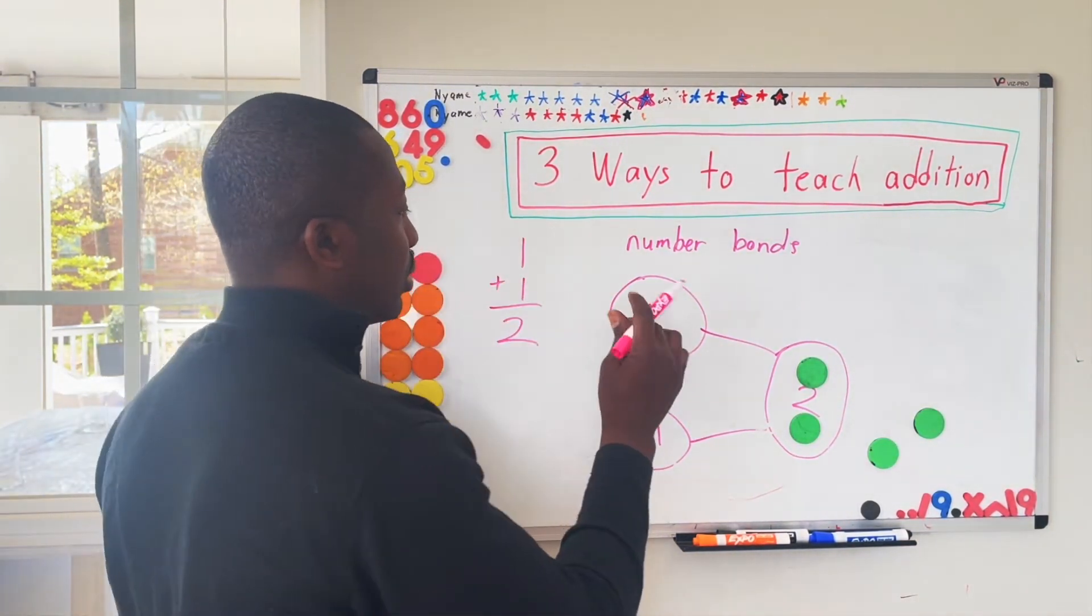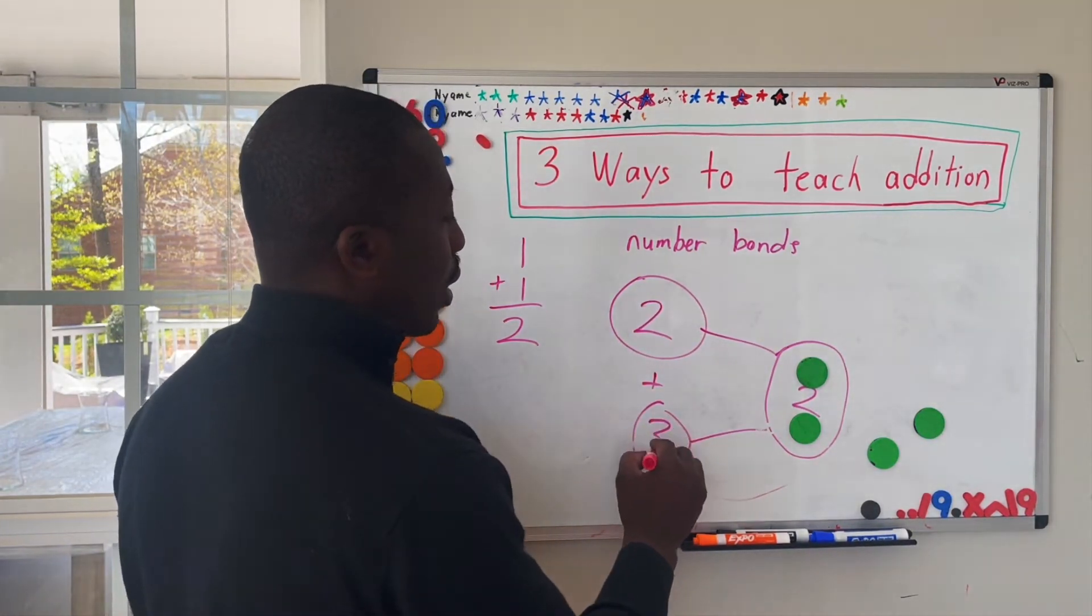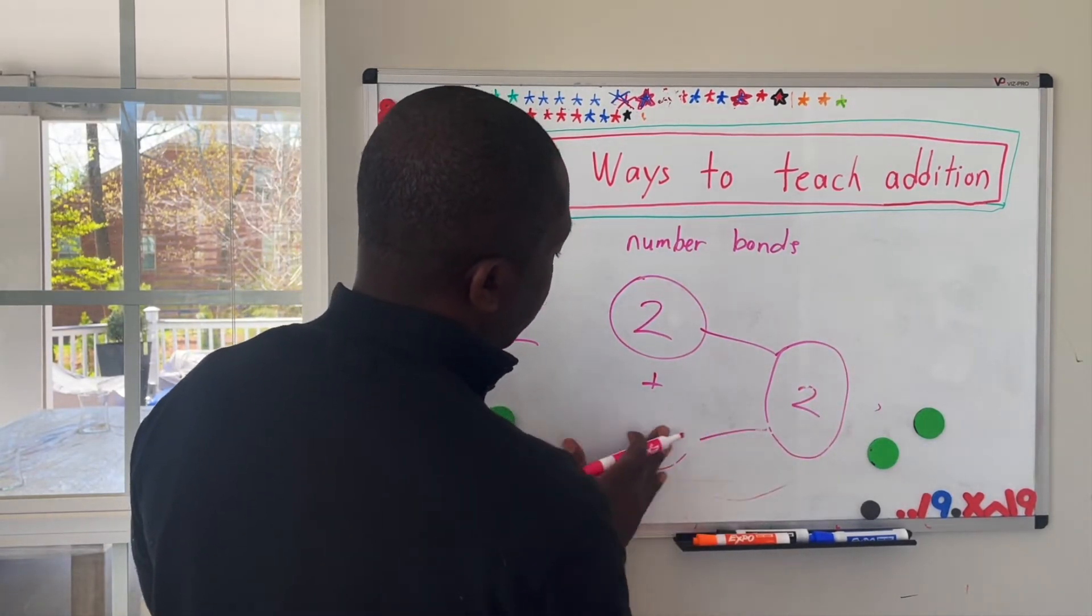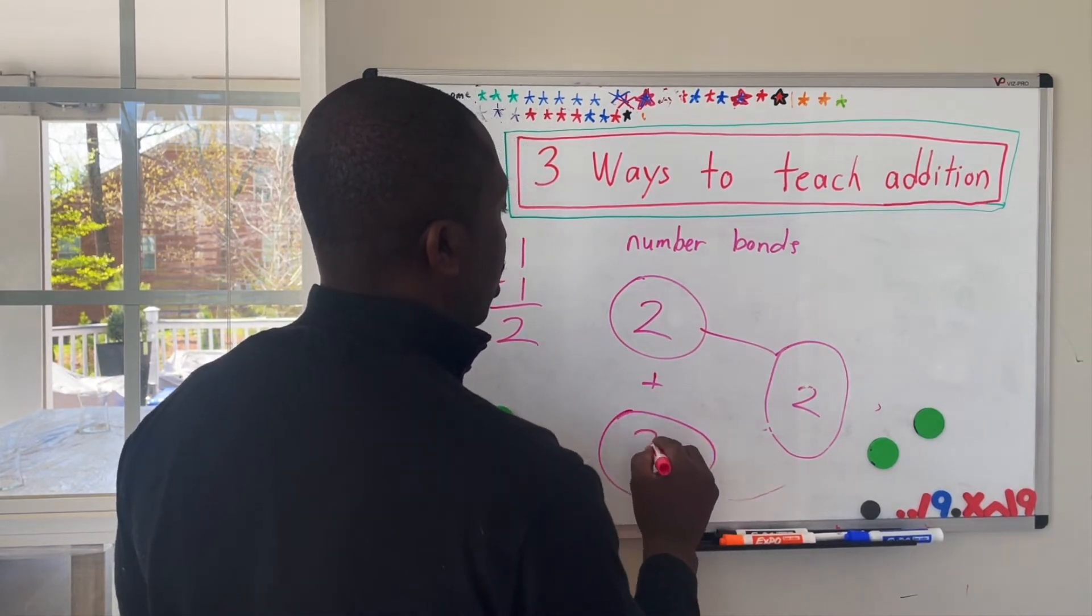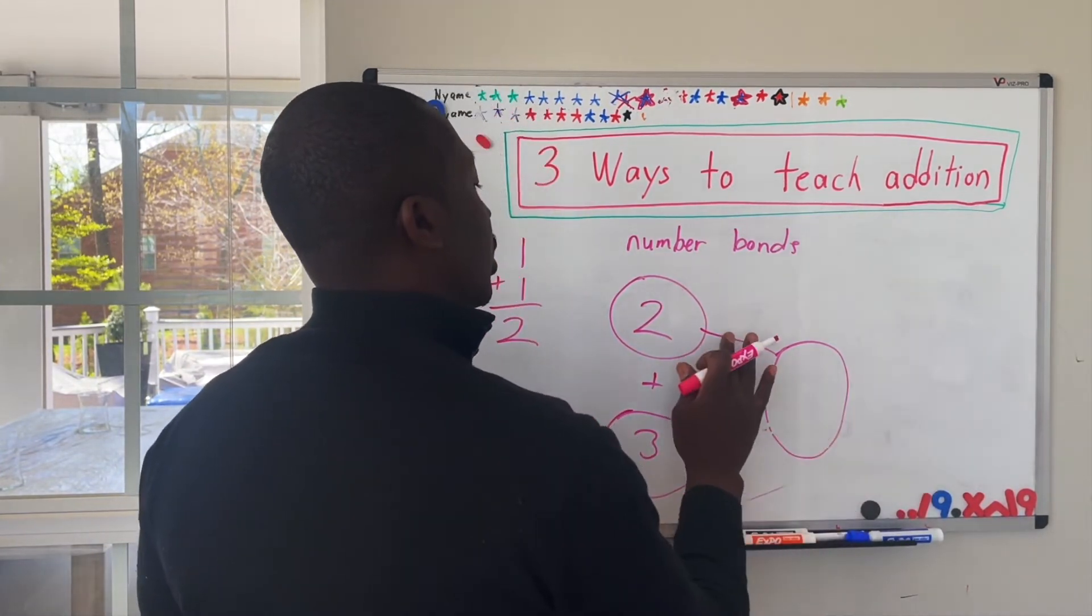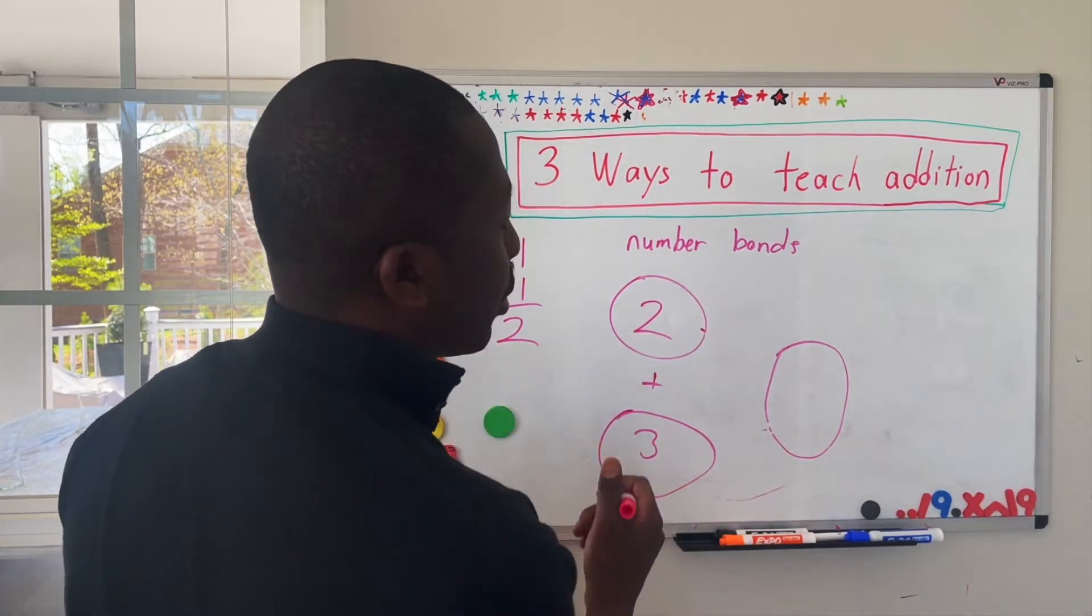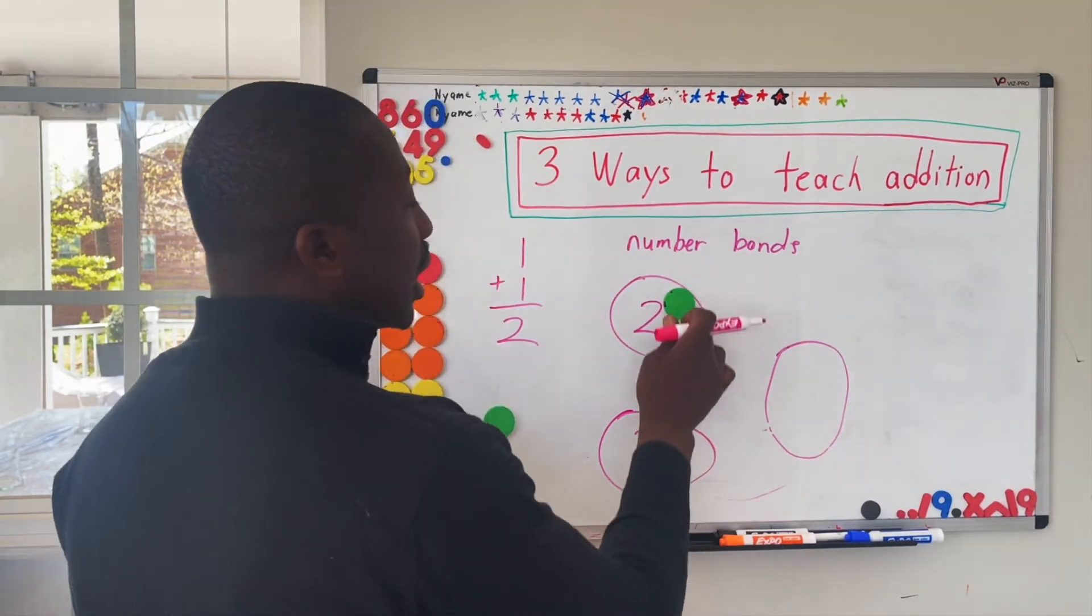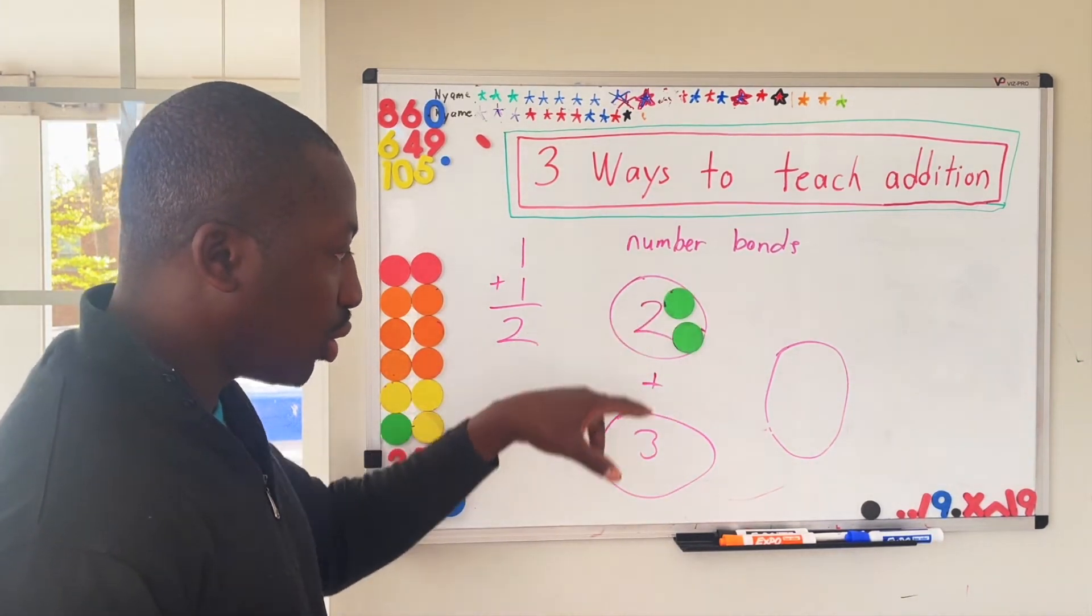And this can be done, for example, with the same example, two plus three. So if I were teaching this, what I would say is what number is this? And they would say two. I said, take two green circles. And with this, I think it's really important to use different colors with the manipulatives. That way they get that the two and the three are different.